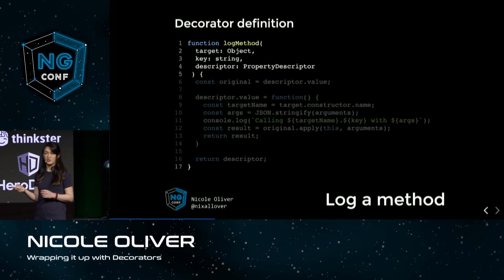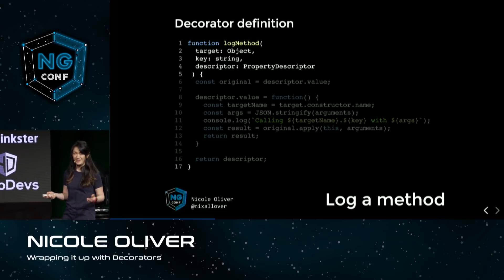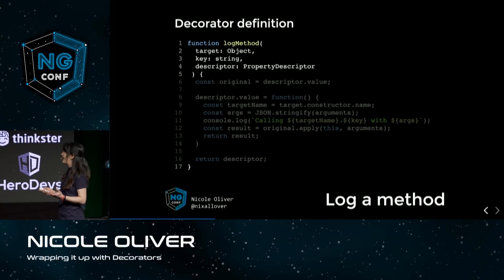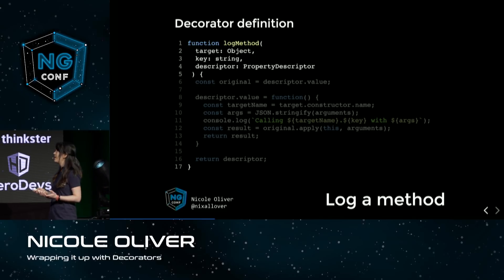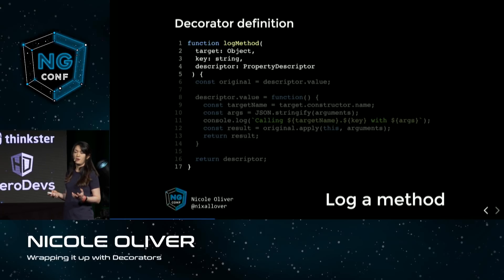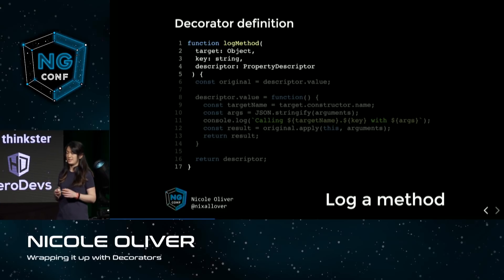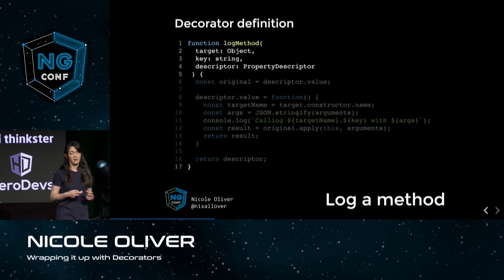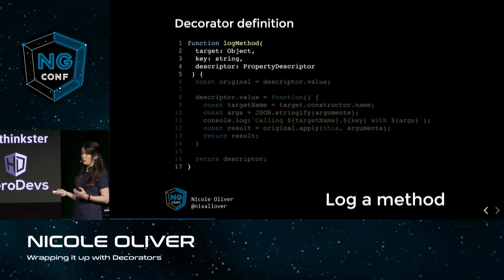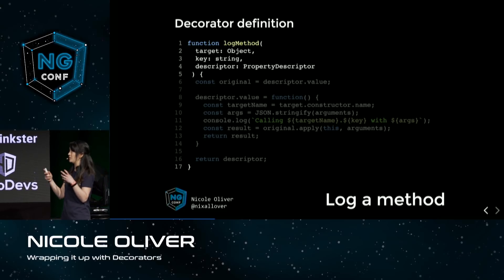Here we have our decorator definition. The highlighted part is our decorator wrapper — and the first thing you'll notice is that it's just a function, with no particularly special syntax. We're defining a function with a particular signature. Because we are dealing with a method decorator, we pass in three arguments: the target, which is our planet class; a string representing the name of our method, which is 'greet' in our example; and the descriptor, which is metadata about our method.